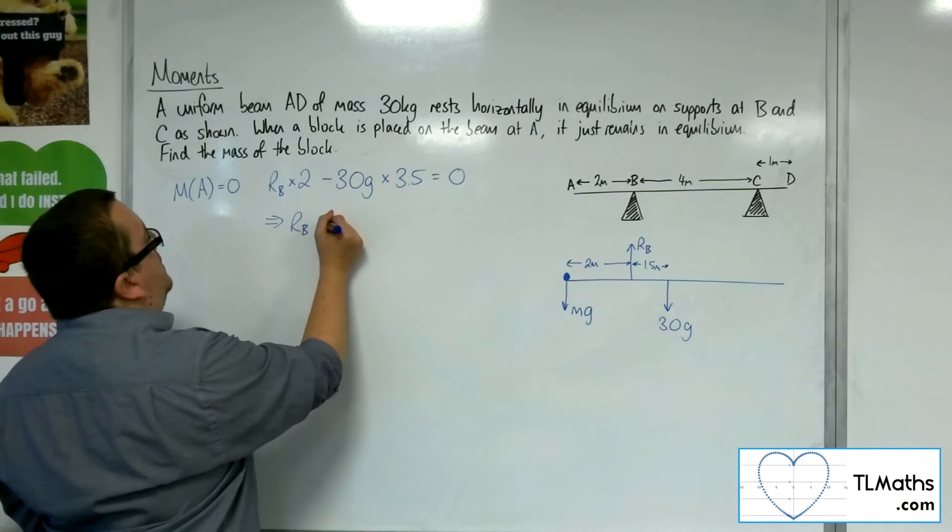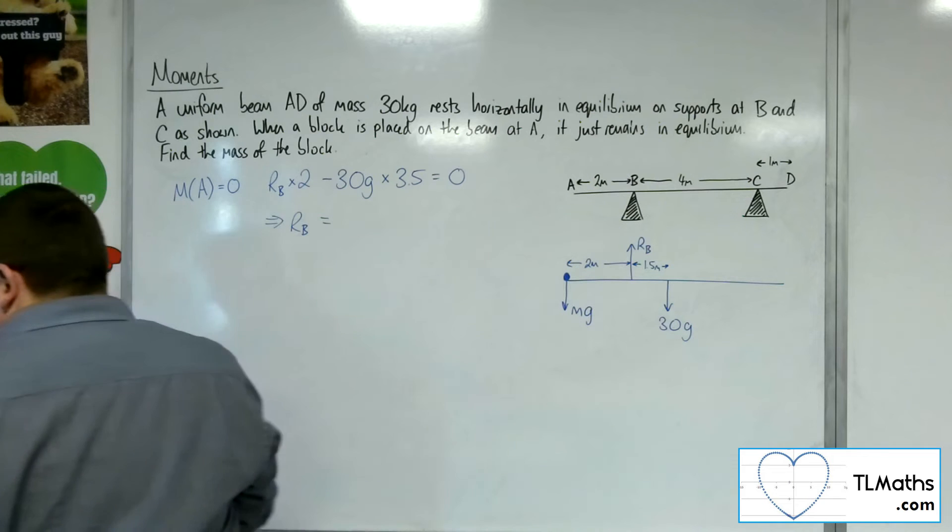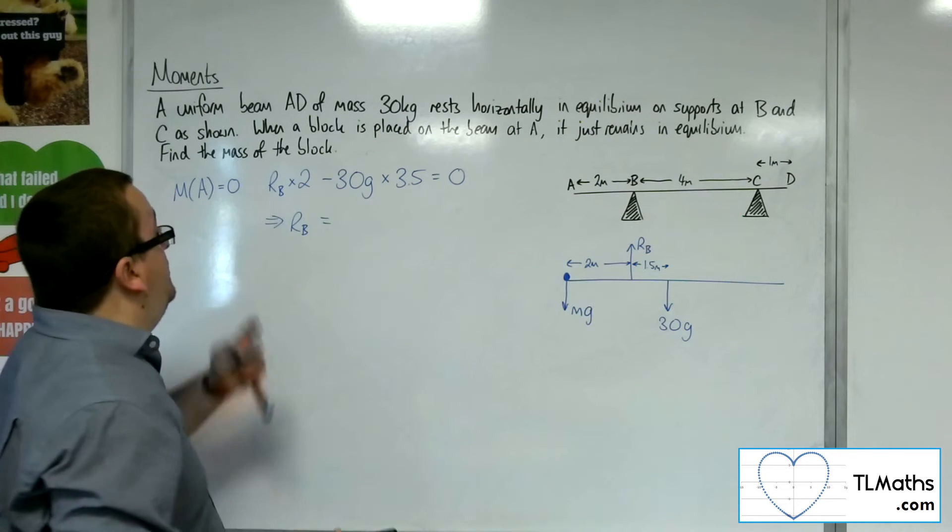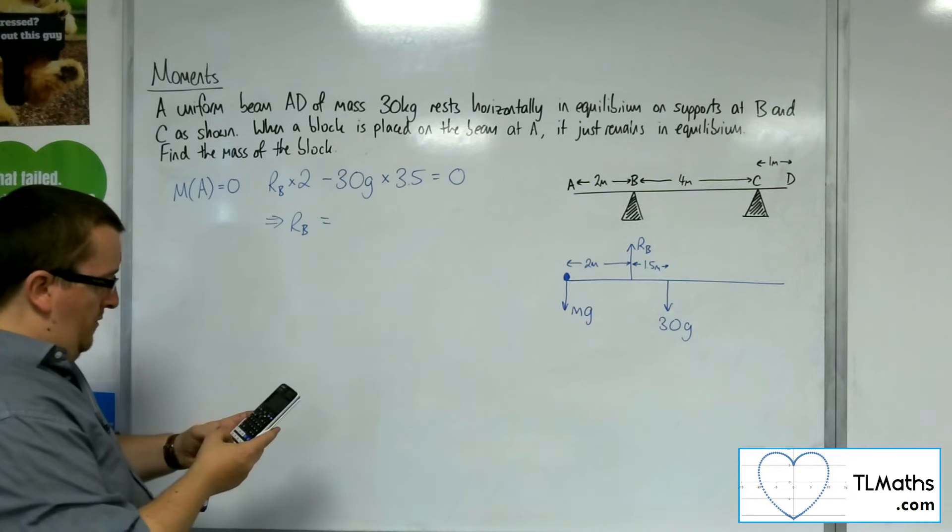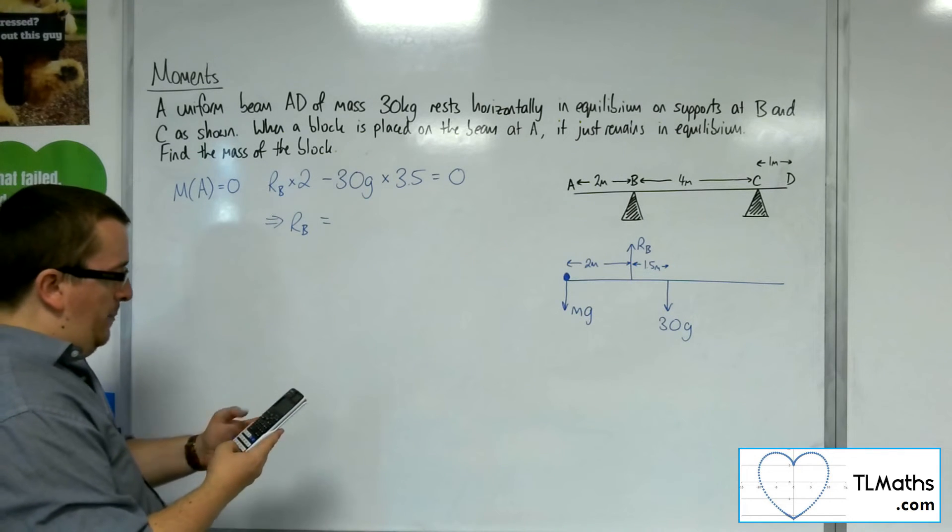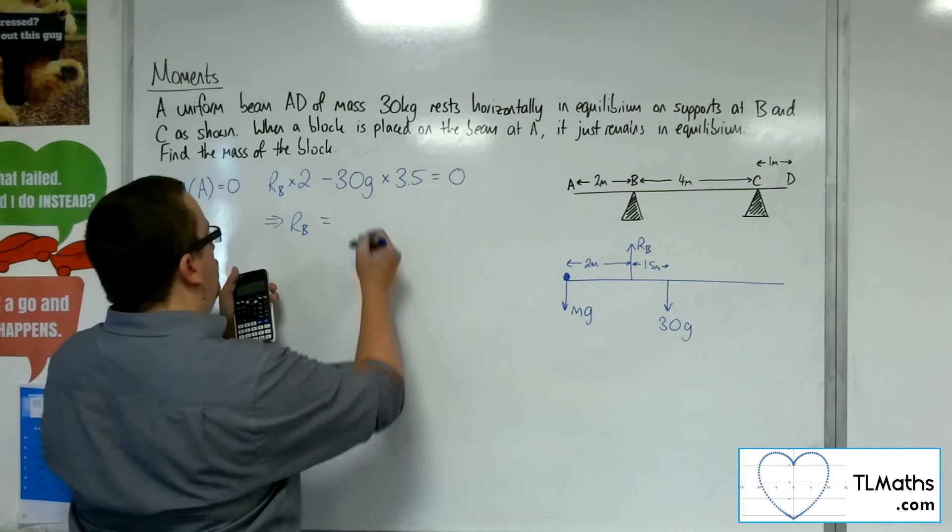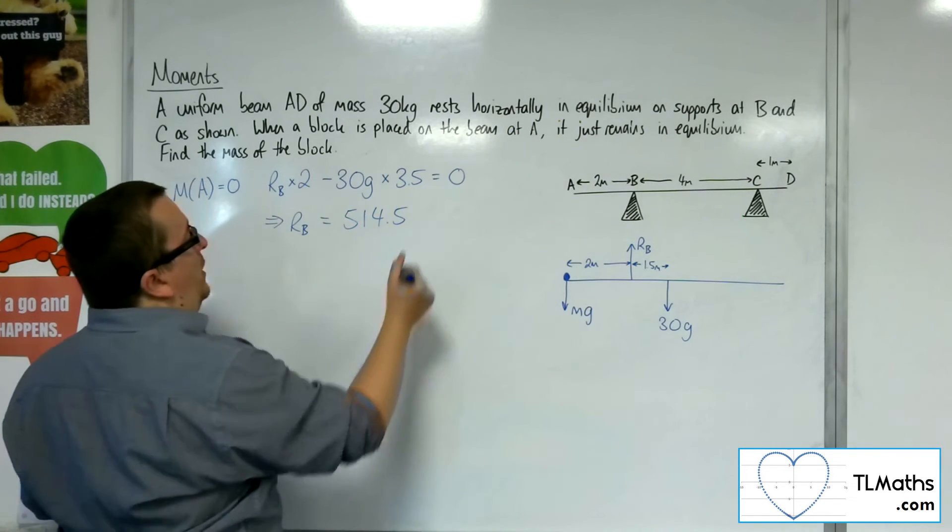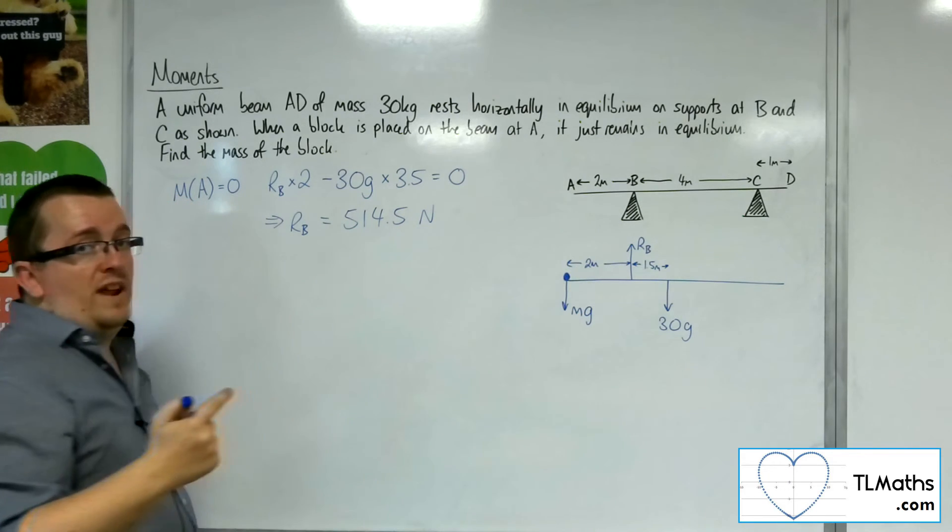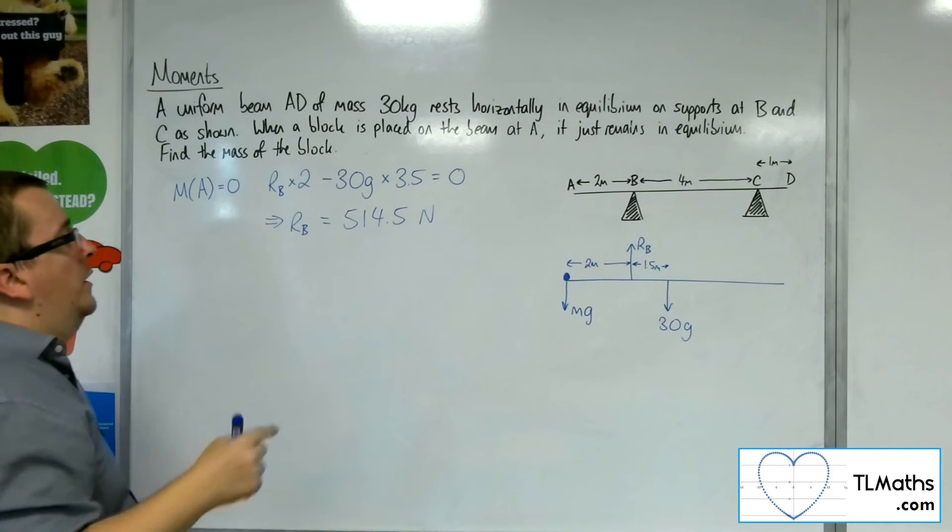So RB is, well I'm going to take g as 9.8. So 30 times 9.8 times 3.5 is 1029. Divide that by 2 is 514.5, so that is the normal reaction force.